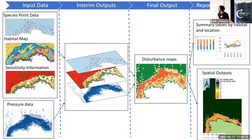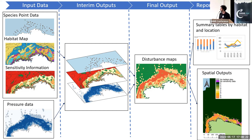In this slide, you can see the data flow of the indicator. The indicator relies on two types of underlying information. We need to know the distribution of benthic habitats and benthic species, and every information on their sensitivity to specific pressures. The second type of information that we need is information on the pressure itself — the distribution and intensity. These two types of underlying information are then combined to produce maps of potential disturbance to the seafloor. The indicator can produce different types of output, including spatial outputs like maps, but also summary statistics.